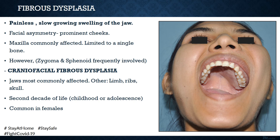Over time this results in asymmetry of the face, especially with prominence of the cheek. Fibrous dysplasia commonly affects the maxilla compared to the mandible. Most cases are monostotic and involve a single bone, either the maxilla or mandible. However, since the maxilla is intricately associated with other craniofacial bones such as the zygoma and sphenoid, cases involving those adjacent bones have been given the specific term craniofacial fibrous dysplasia and technically cannot be considered monostotic.